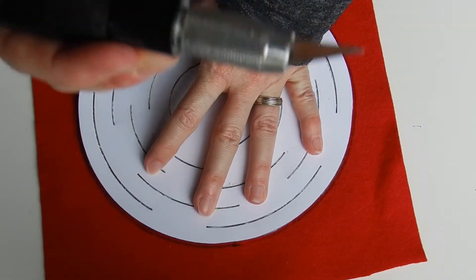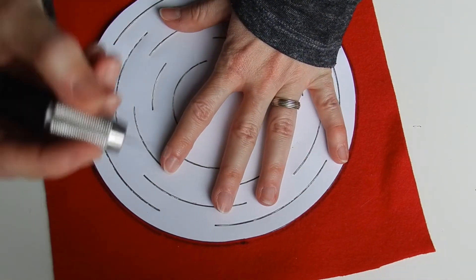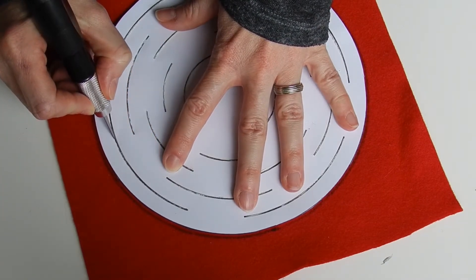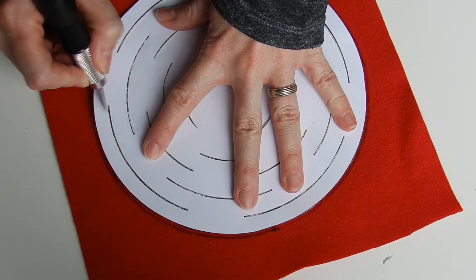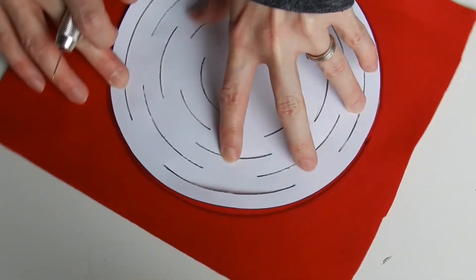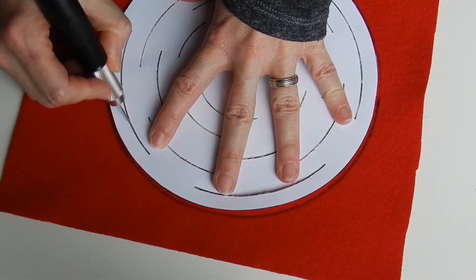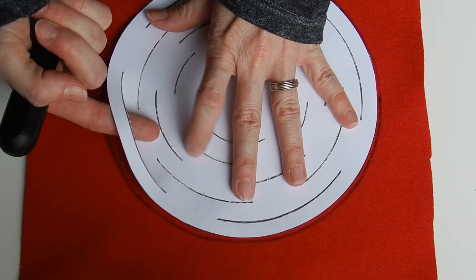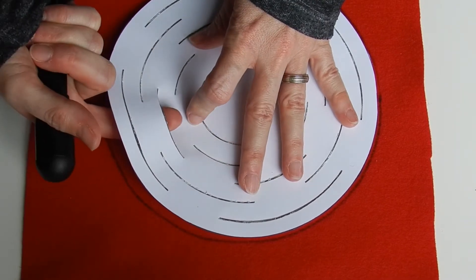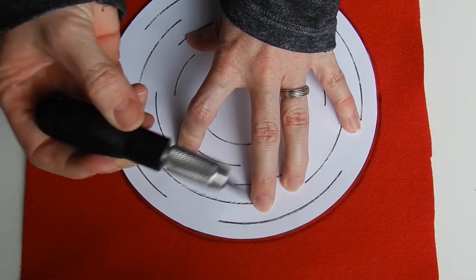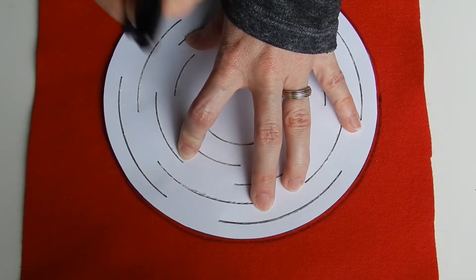Next you're going to take your exacto knife or your scissors and you're going to cut through the cardstock on all of the black lines, making sure it's cut all the way through. You might have to go over your lines a couple of times to get a cut all the way through. Don't press too hard because you don't want to go through the felt, just the paper. You'll notice that the paper does tear away a little bit but that's no problem.